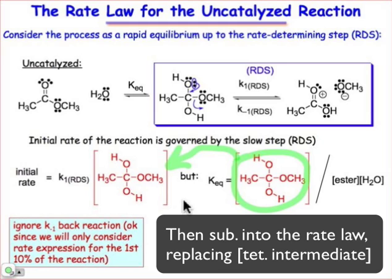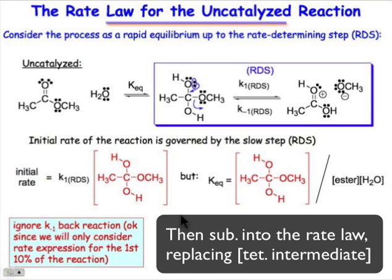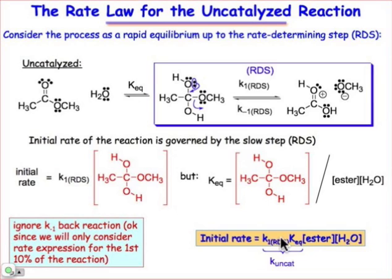And so now we can do that, and that's exactly how we can write the rate law that has the product of those two constants — the k1 for the rate determining step times that K_eq. That is in fact exactly what makes up k_uncat that we talked about when we talked about the overall rate for that ester hydrolysis reaction.